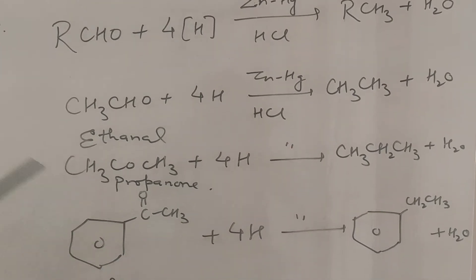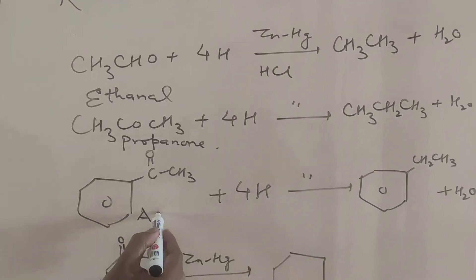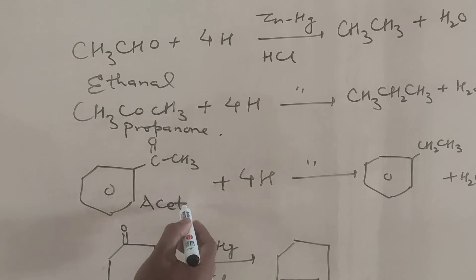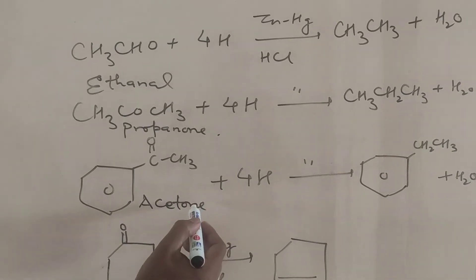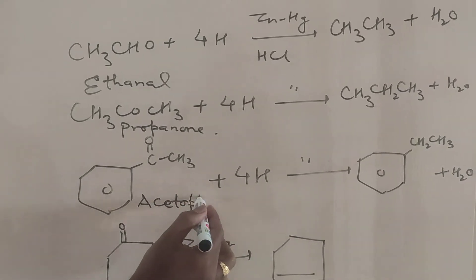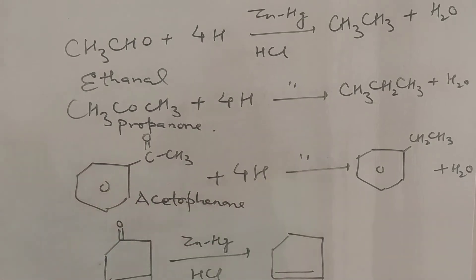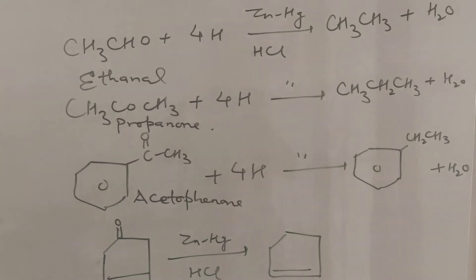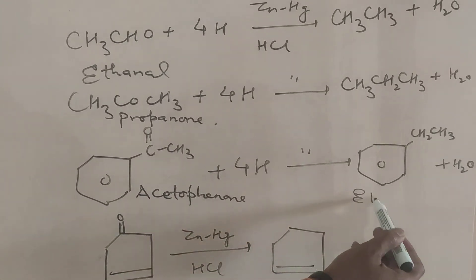Suppose we have acetophenone, also called methyl phenyl ketone. When treated with zinc amalgam HCl, it forms ethylbenzene.